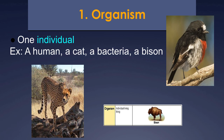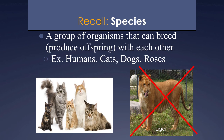A species is a group of organisms that can breed to have offspring that are fertile — meaning their babies can also have babies. So ligers and mules are not a species, but cats, humans, and lizards are examples of species.